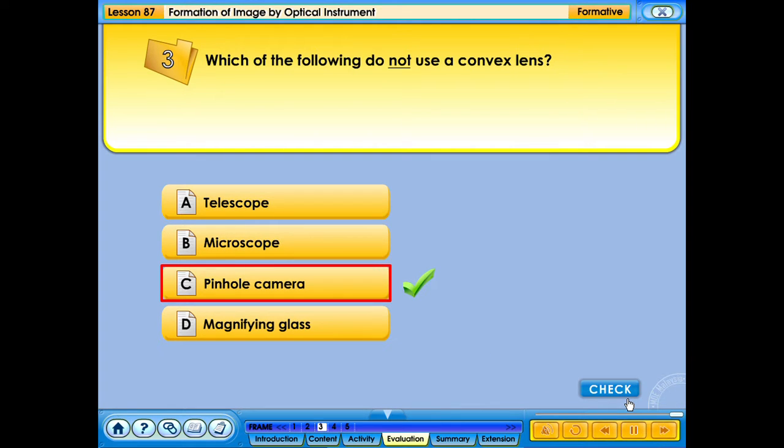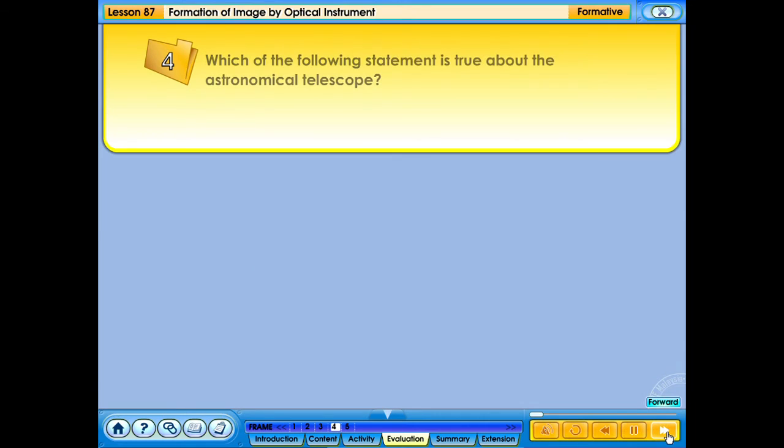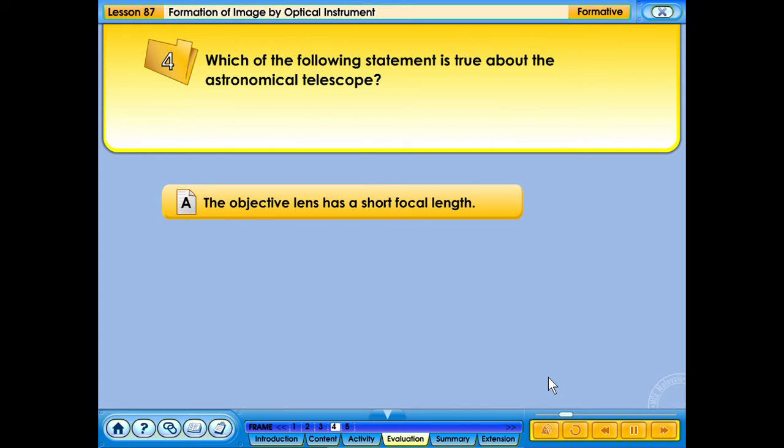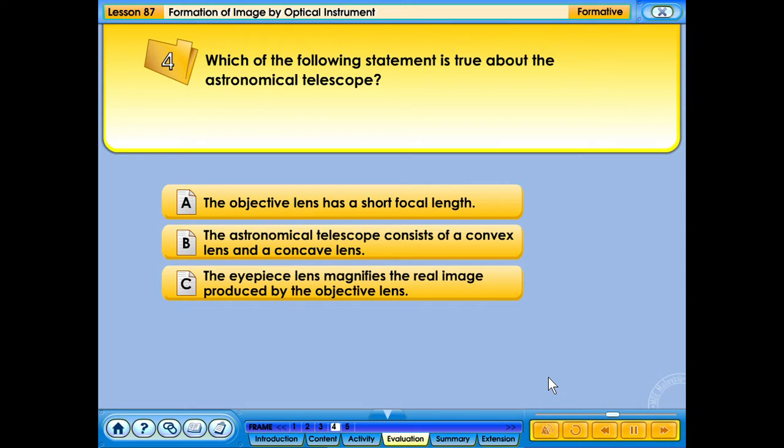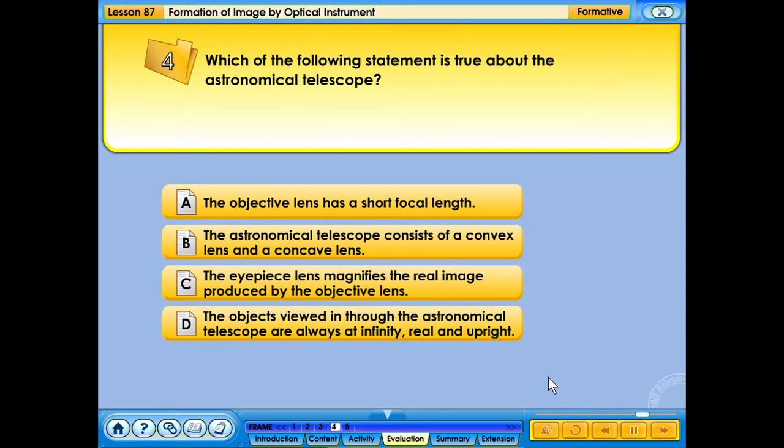Your answer is correct. Which of the following statement is true about the astronomical telescope? A. The objective lens has a short focal length. B. The astronomical telescope consists of a convex lens and a concave lens. C. The eyepiece lens magnifies the real image produced by the objective lens. D. The objects viewed through the astronomical telescope are always at infinity, real and upright.